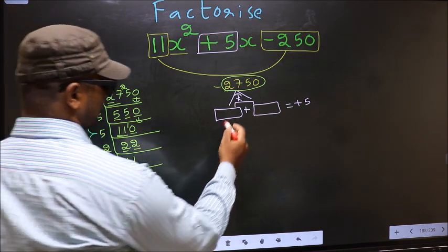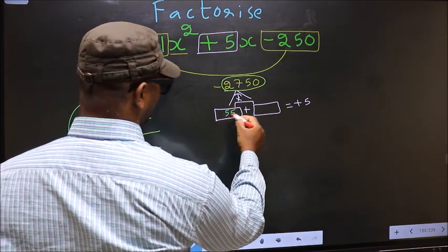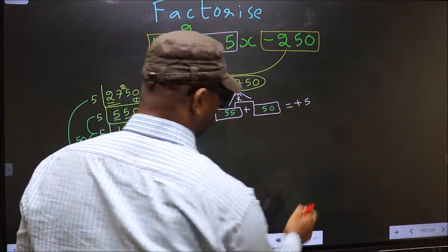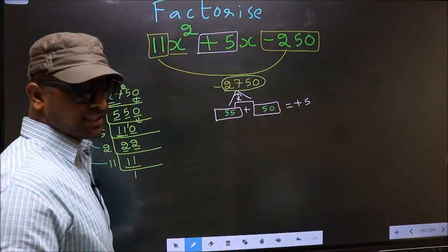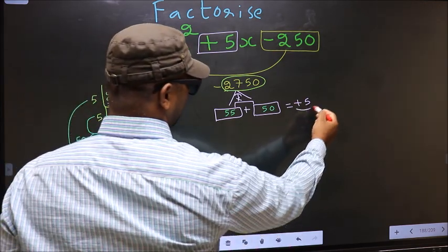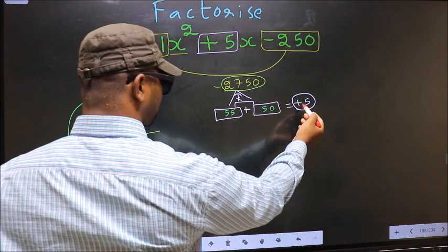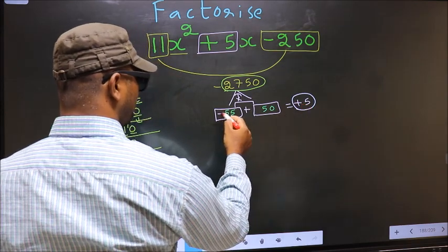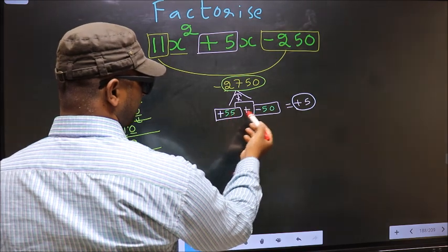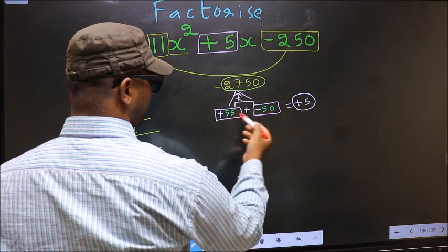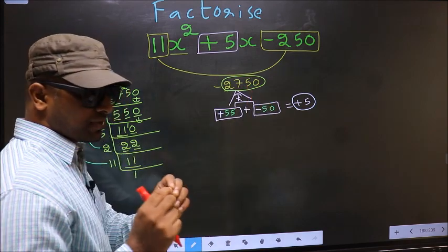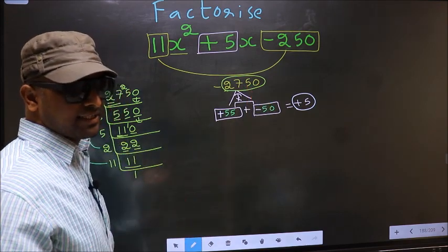So here you write 55 and here 50. Now we should adjust the signs. What I mean is over here we have +5. To get +5 we should put + here and - here. +55 - 50 = +5, +55 × -50 = -2750. So we have adjusted the signs.